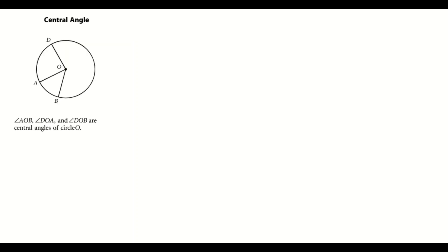Welcome back to 9.2 Notes — this is Defining Angles in a Circle. We're looking at central angles first. A central angle is formed by two radii. Here are the two radii that form this angle.